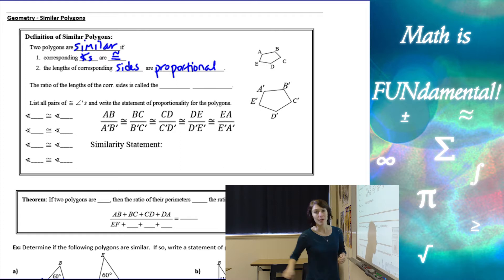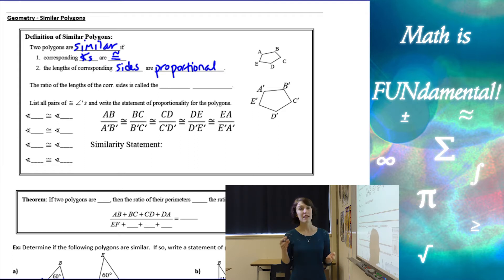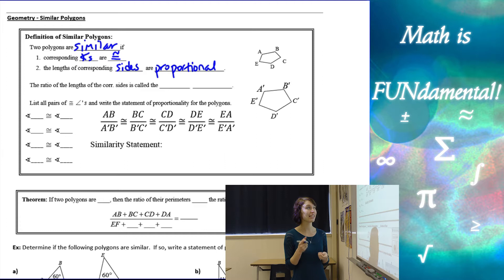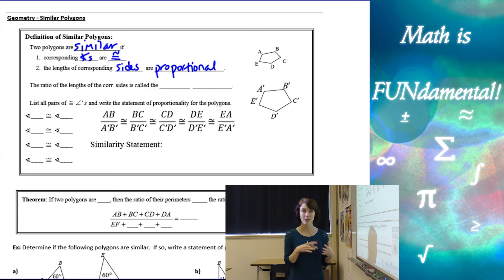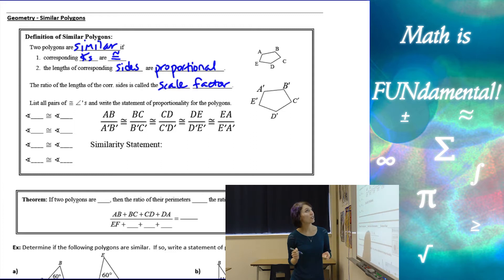If you remember, back a while ago we learned about congruent figures. Congruent figures have congruent angles but they also have congruent sides — they have to be the same size and shape. With similar figures, they have to be the same shape, the angles all have to be the same, but they don't have to be the same size. One can be bigger than the other as long as the side lengths are proportional. The ratio of the lengths of the corresponding sides is what we call the scale factor.